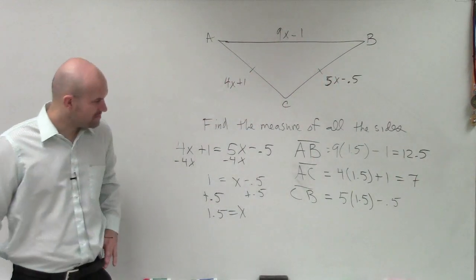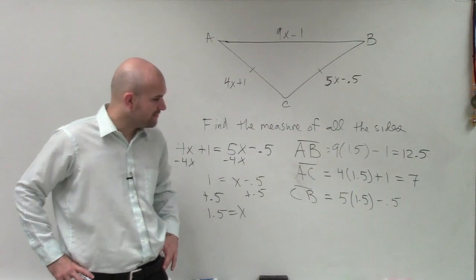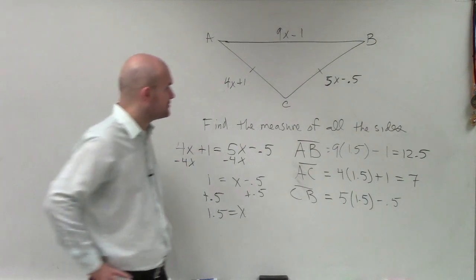And 5 times 1.5 is 5. Half of 5 is 2.5. So that's going to be 7.5 minus 0.5 is equal to 7 as well.